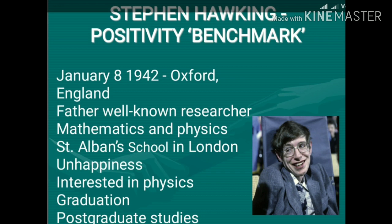Stephen William Hawking was born on January 8, 1942, in Oxford, England. His father was a well-known researcher in tropical medicine, but Stephen was interested in studying mathematics and physics. His early school years at St. Alban's School in London were marked by unhappiness with his peers and on the playing field. While at Oxford, he became increasingly interested in physics. After completion of his graduation, he immediately began postgraduate studies at Cambridge University.